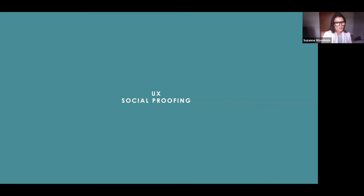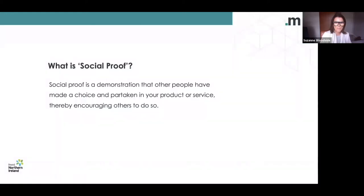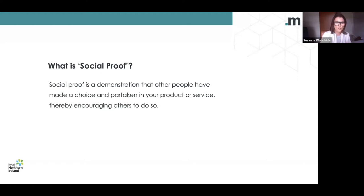Social proofing is another tactic that e-commerce marketers have increasingly honed in on for competitive advantage. Social proof is a demonstration that other people have made a choice to partake in your product or service, thereby encouraging others to do so. The theory is that people will trust the opinions and actions of your customers more than they'll trust you. Examples of social proofing include testimonials and business credentials, showing best sellers, product likes integrated with social media, urgency and scarcity, and customer reviews.